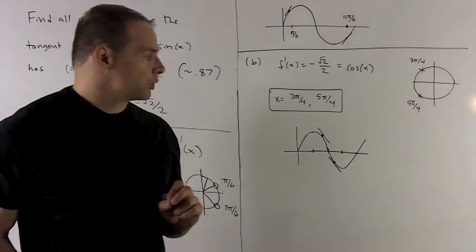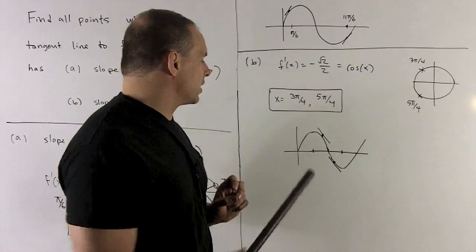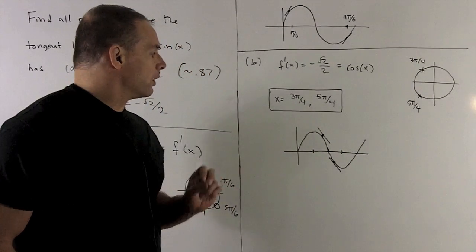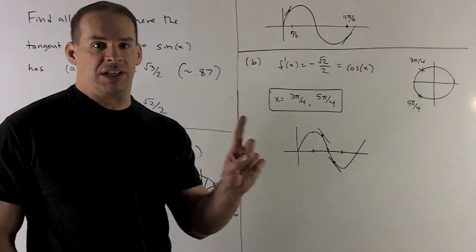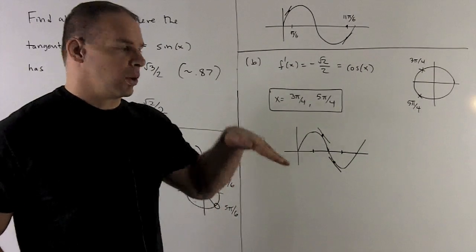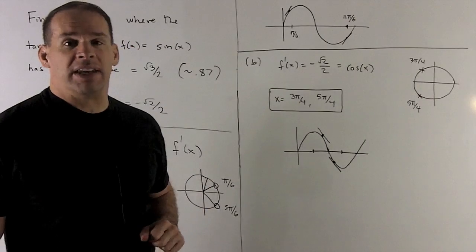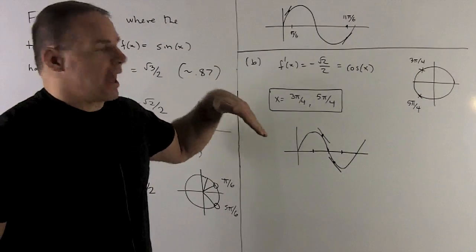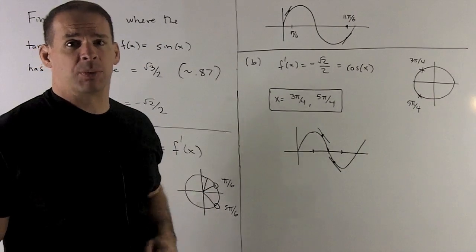Let's check the graph again. So we'll notice, if we draw in our tangent lines at the points 3 pi fourths and 5 pi fourths, they're going to be on each side of pi. We're going to have our slope going in this direction. And since we have a negative slope, it's going to have to go that way. So this looks like it's probably correct.